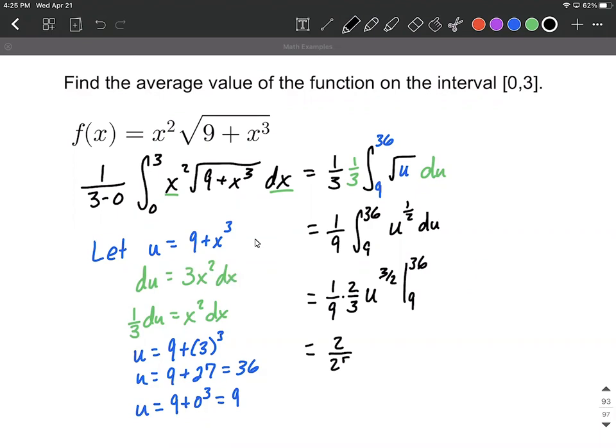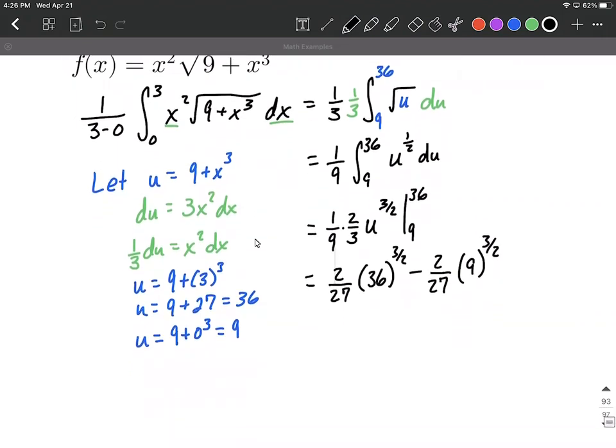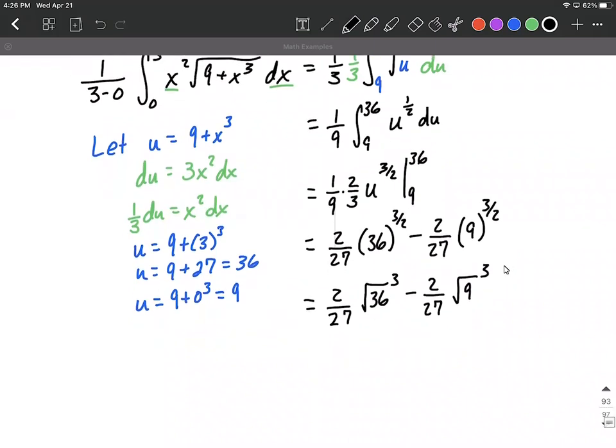From here, this is 2/27. And then we're going to go ahead and fill in the 36, the top value raised to the 3/2 power, and subtract away 2/27, where we plug in the bottom value raised to the 3/2 power. With a little bit of simplifying down here, we could just put it in our calculator, or we could think of this as being the square root of 36 raised to the third power. And the square root of 9, because our denominator is a 9, our denominator here is a 2 for our rational exponent. That's the same thing as a square root, and then we'll cube it. So 2/27, and then we have 6 raised to the third power minus 2/27. The square root of 9 is 3 raised to the third power.